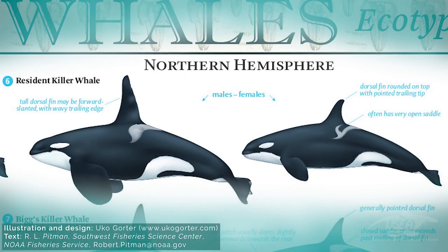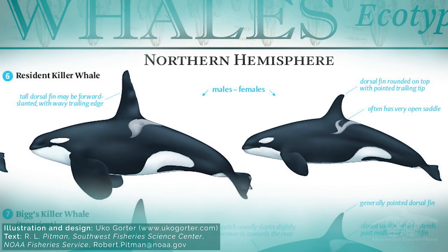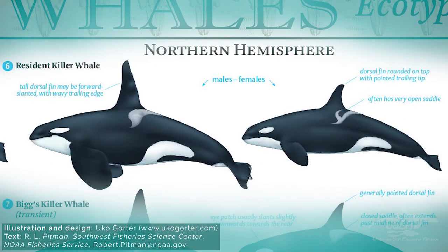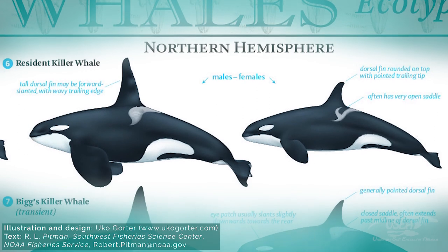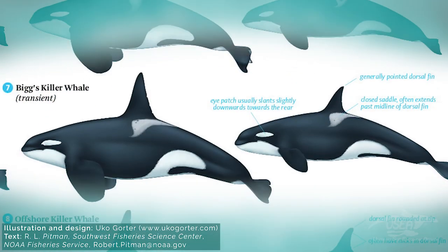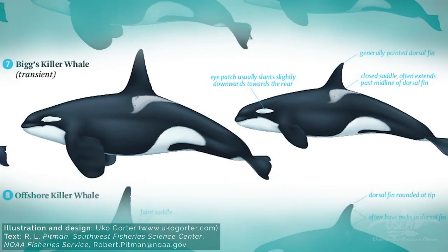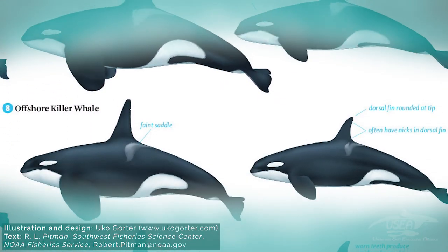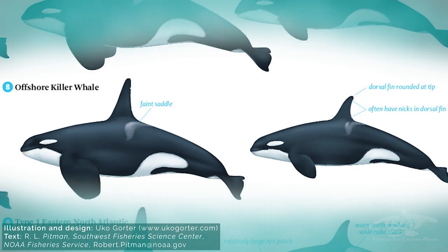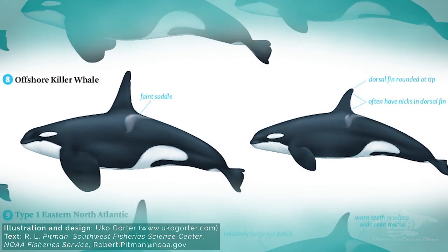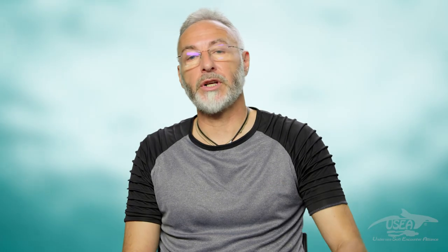Let's go to British Columbia, where we have three ecotypes of orcas. First, there are the residents, split into two populations — the northern and southern residents. The second ecotype are the transients, also called Bigg's killer whales, and they eat marine mammals. And there is a third ecotype called offshore. These live out in the open sea. We know little about them, except that they eat sharks — we don't know if they eat only sharks, but we have observations of offshore orcas eating sharks.